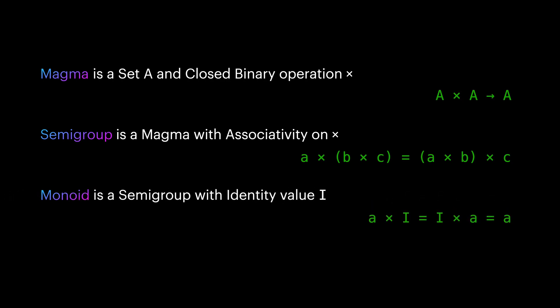Monoid is a semi-group that has an identity value in the set. A value is identity if multiplying it with any value like A in the set returns the value A.